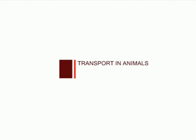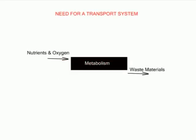Welcome to the next chapter on transport in animals. Animals need a continuous supply of food, nutrients and oxygen to carry out life processes, which include growth, repair, maintenance and movement. These materials are obtained from outside the body via ingestion and are broken down during metabolism to release energy. In the process, waste materials are produced, and animals need their continuous removal to avoid toxic build-up — for example, ammonia.